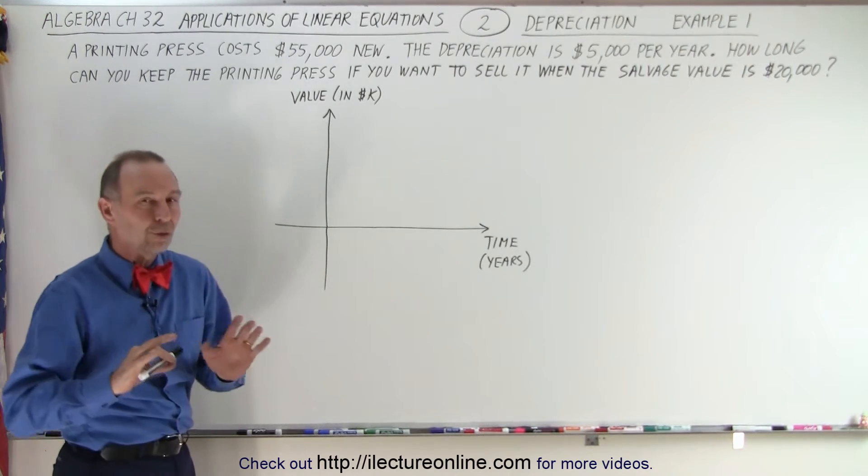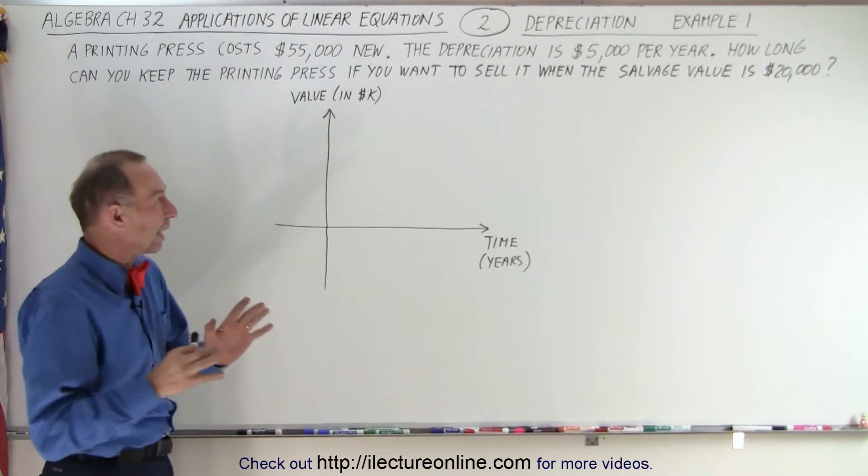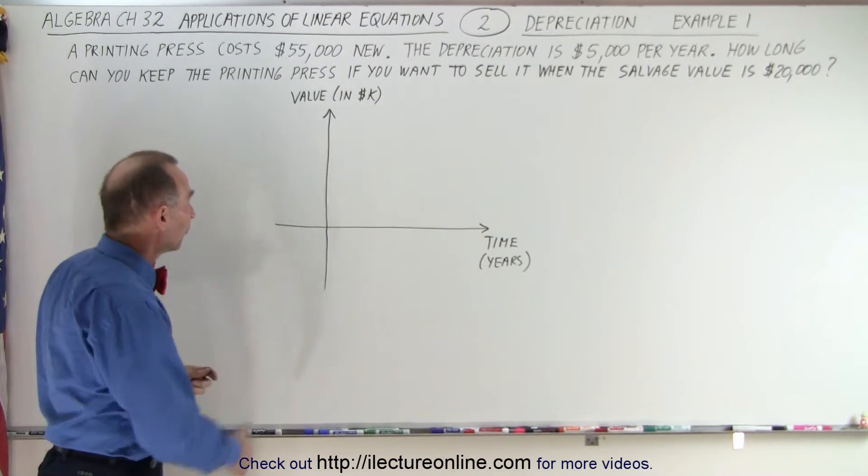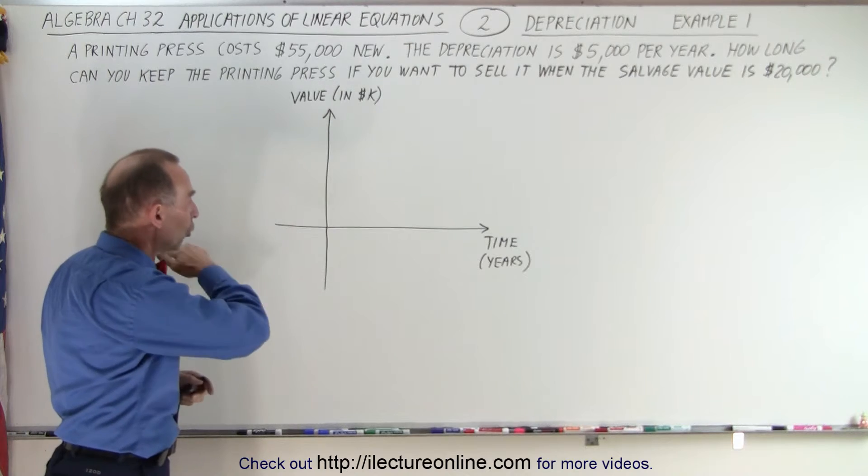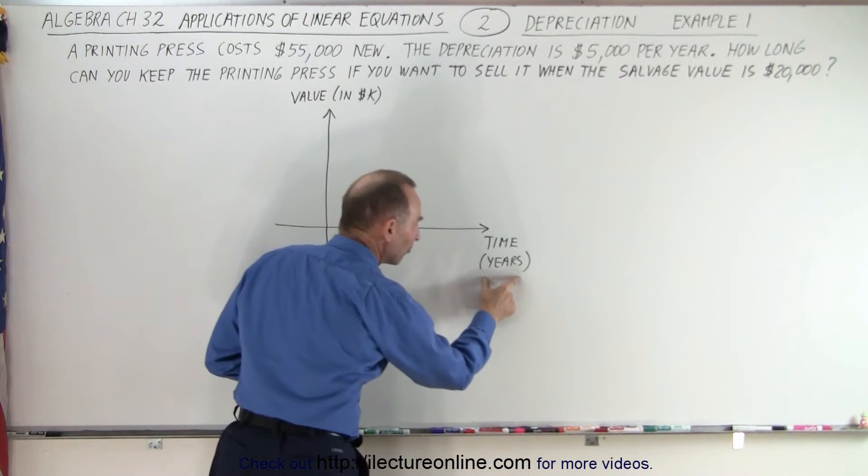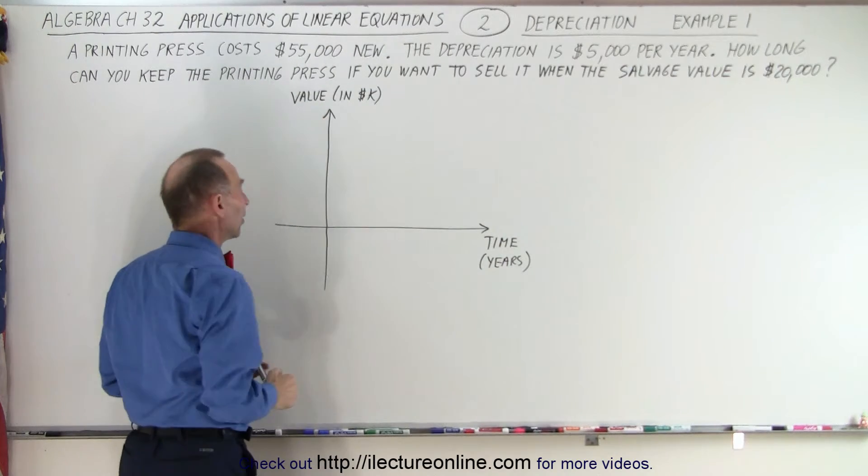So let's try to graph it first. It's always a good idea to try to graph it because it gives you a visual of what's happening in the problem. The vertical axis is the value. The horizontal axis is time. So this becomes the independent variable. This will be the dependent variable.